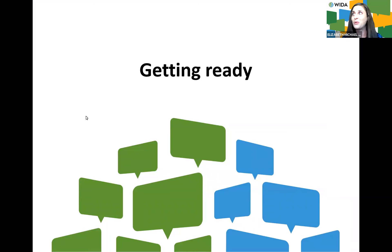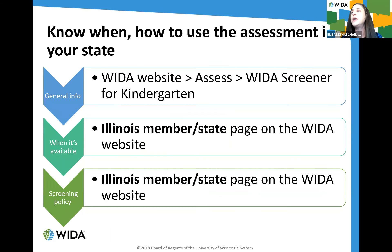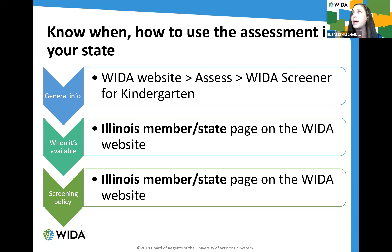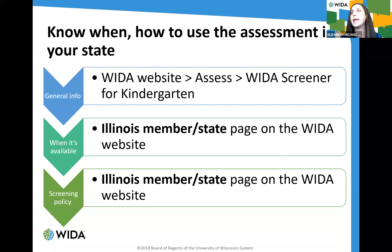Some things to bear in mind to help you get ready for this assessment: it's important to know when and how to use the assessment in your particular state context in Illinois. For general information, you can visit the public-facing WIDA website by clicking the Assess tab and navigating to WIDA Screener for Kindergarten. Once it's available for use in Illinois, look at the Illinois Member State page to find out when it's available, which version to use, and all specific screening policies for Illinois.